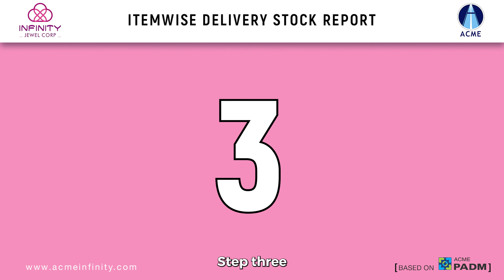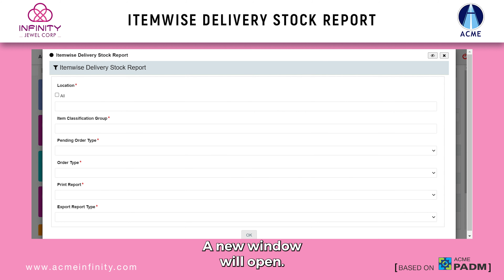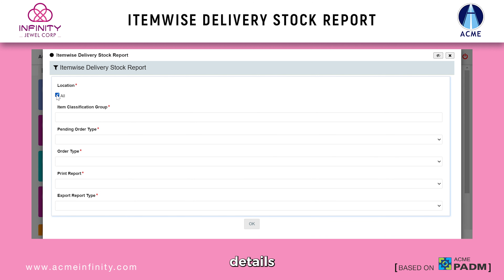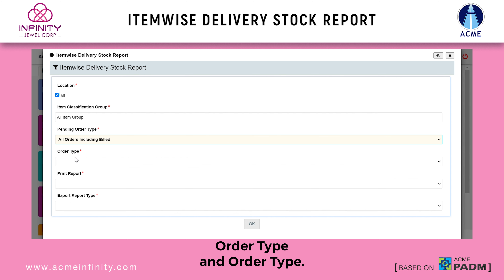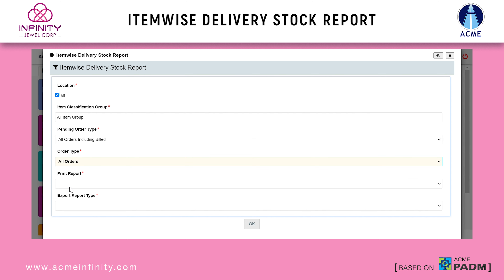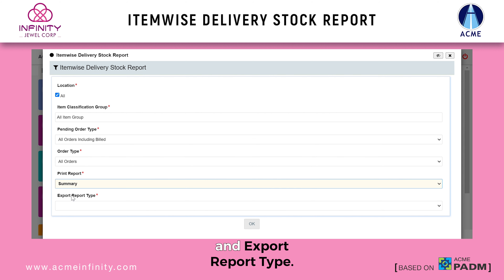Step 3. A new window will open. Enter all necessary details, such as Location, Item Classification Group, Pending Order Type, and Order Type. Choose Print Report and Export Report Type.